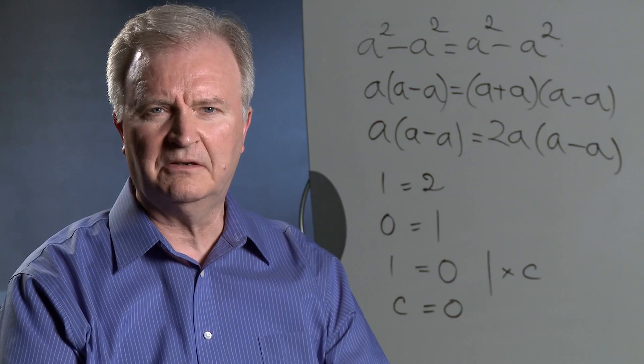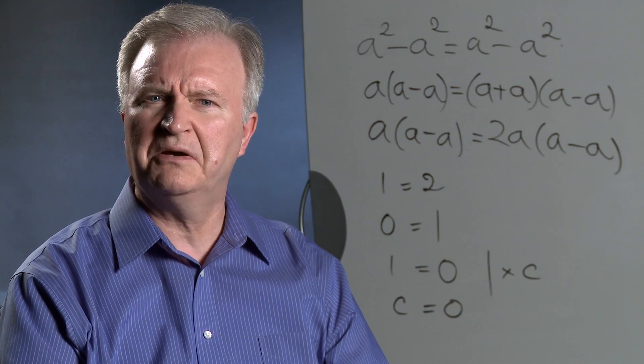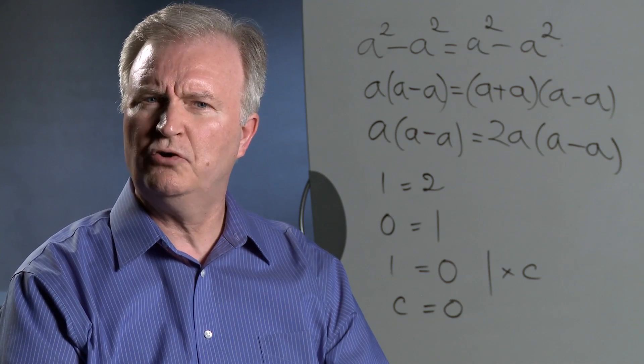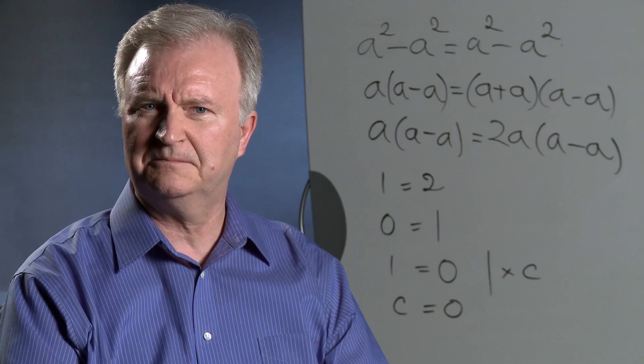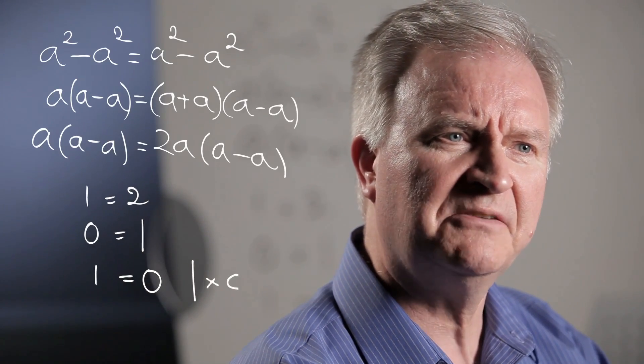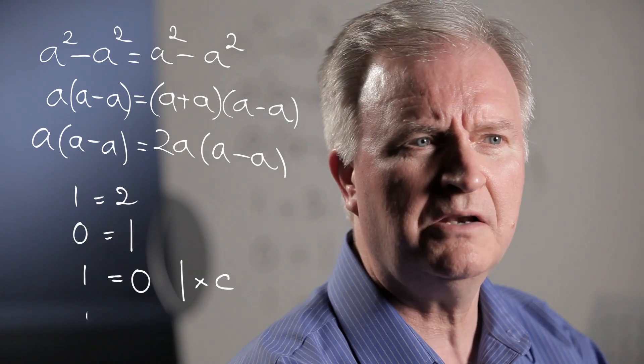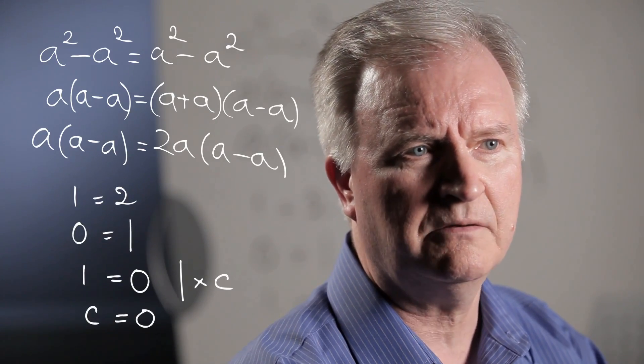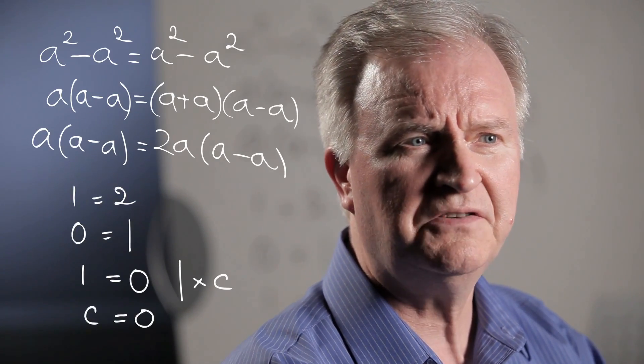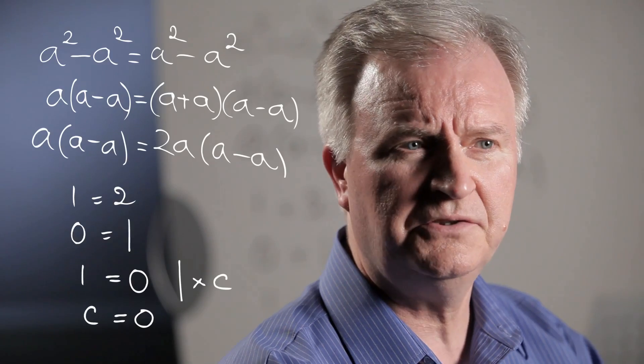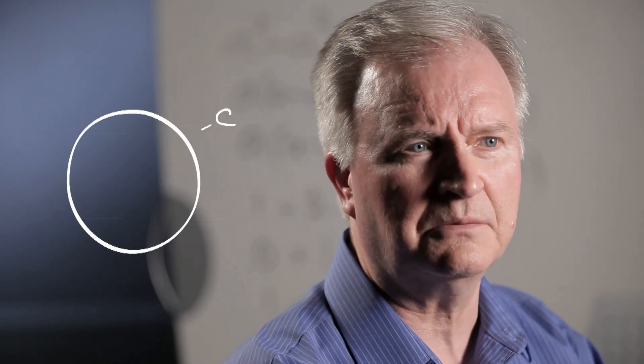Suppose that the Earth is a perfect sphere and let C be its curvature. Roughly speaking, curvature is a measure of the amount by which the shape of an object differs from being flat. Multiplying both sides by C, we arrive at C is equal to 0. Therefore, the curvature of the Earth is 0, which in layman's terms means that the Earth is flat. Yeah, right.